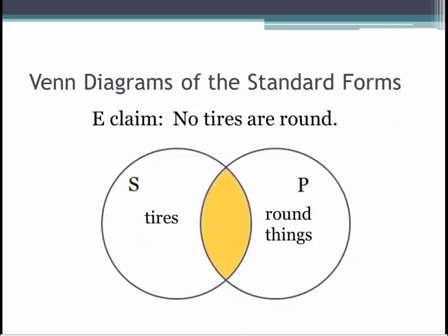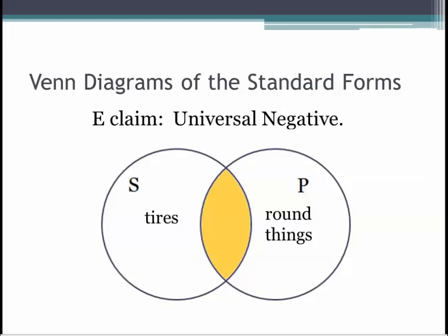Suppose a tire manufacturer has some major problems — none of their tires are round. This is an example of an E proposition. In this case, the center area where the circles overlap is filled in because there are no tires that are also round things. Think of the filled area as indicating a hole — nothing is there. The E claim is universal and negative, saying something about all tires: namely that they are all excluded from the category of round things. That makes it a universal and negative claim.